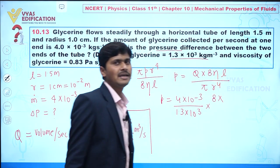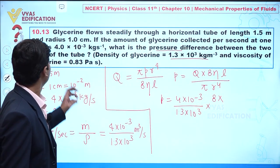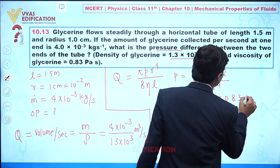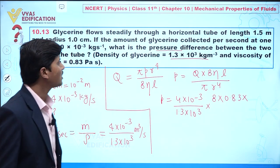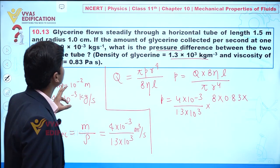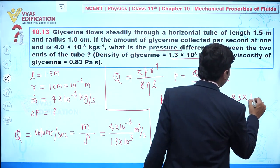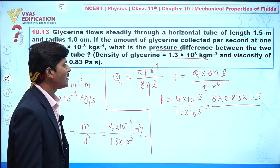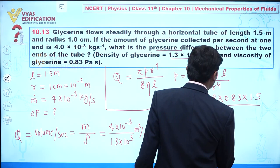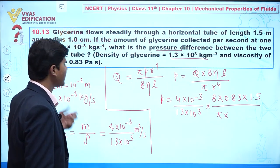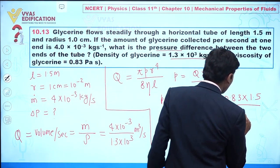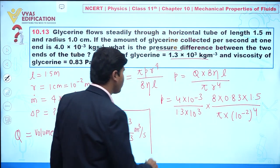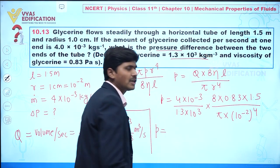This is multiplied by 8 times eta — the viscosity of glycerin, which is 0.83 — multiplied by l, which is 1.5 meter. The whole expression is divided by pi times radius, where the radius is 10 to the power minus 2, raised to the power 4.